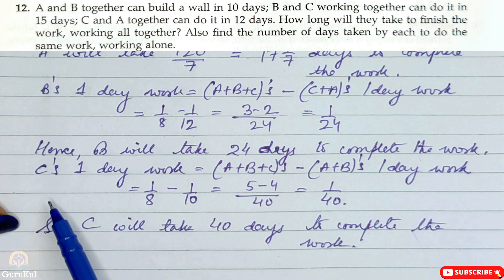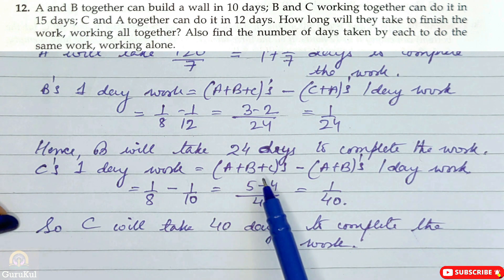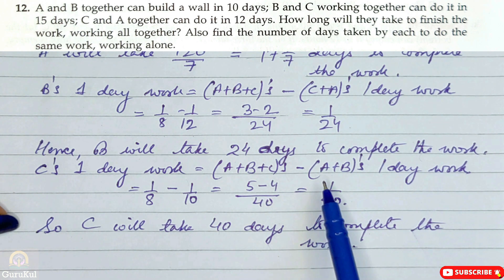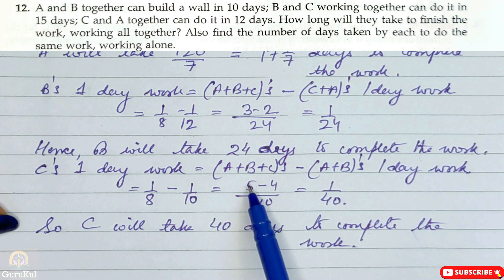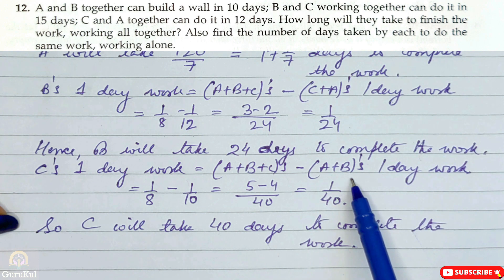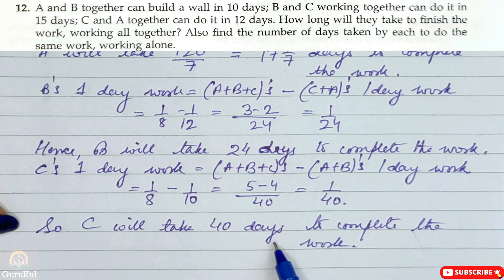Now C's one day work is A plus B plus C's minus A plus B's one day work which is 1 by 8 minus 1 by 10. LCM is 40, so 5 minus 4 which is 1 by 40. So C will take 40 days to complete the given work and this is the answer.